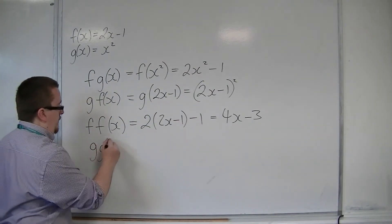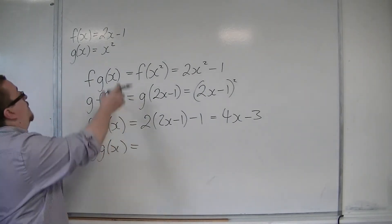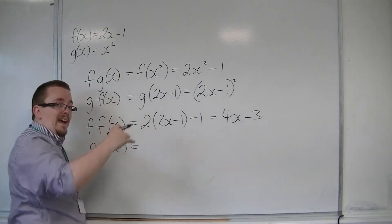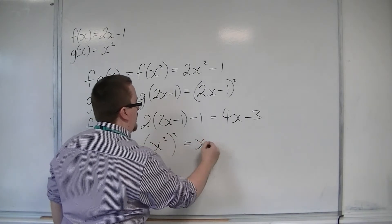And then g g of x would be x squared going into x squared. So x squared squared, which is x to the 4.